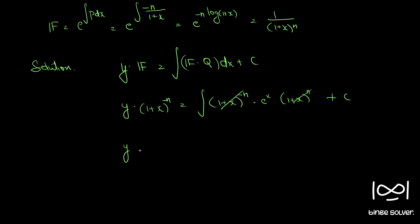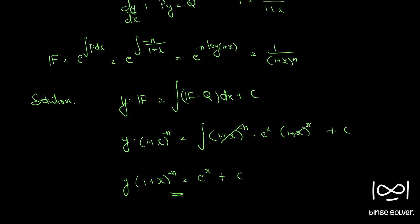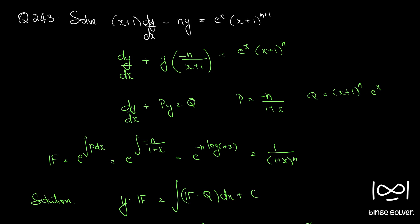So y into (1+x)^(minus n) equals the integral of e^x, which is e^x itself, plus c. We can rearrange this if we want — this is the final answer, where c is an arbitrary constant. This is the solution to question number 243.